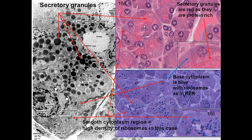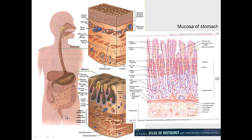Comparing H&E, toluidine blue, and electron micrographs: the dark granules visible in H&E correspond to the same granules in toluidine blue and are confirmed at the EM level. A lumen is visible where cells secrete into the exocrine component of the pancreas. In toluidine blue you can see the granules near the lumen, and the swirls of rough endoplasmic reticulum in the basal cytoplasm, which appears as a blue tint in H&E due to ribosomes - just as the nucleus is blue because of nucleic acids.